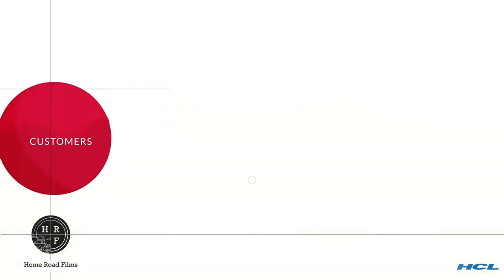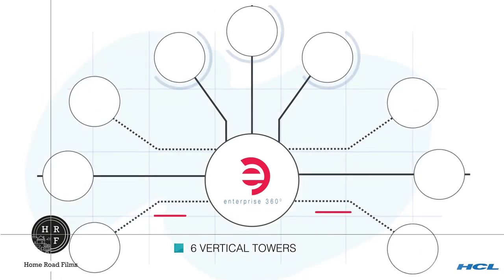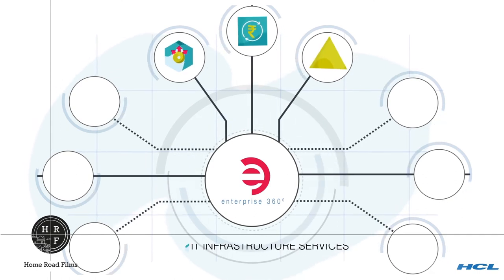E360 portfolio consists of three horizontals and six service towers. The horizontals are technology advisory and insight services, IT infrastructure services, and open-source platforms.